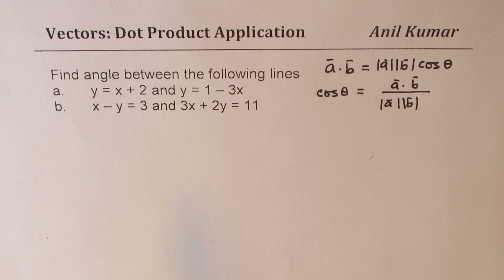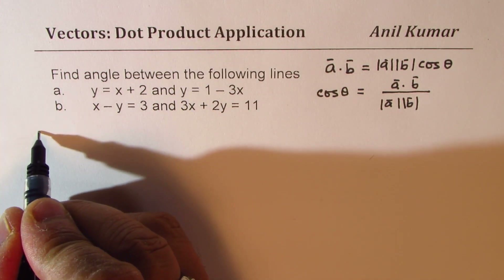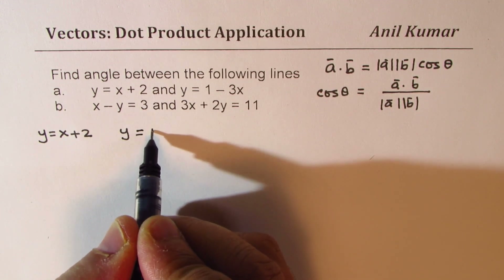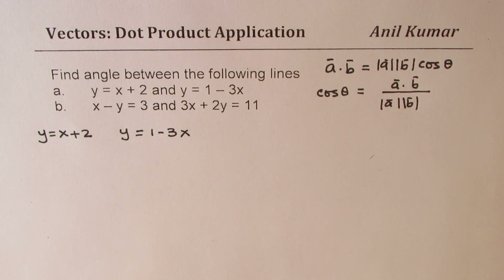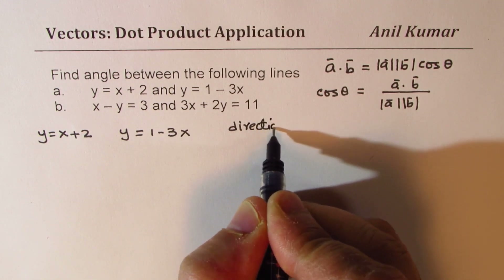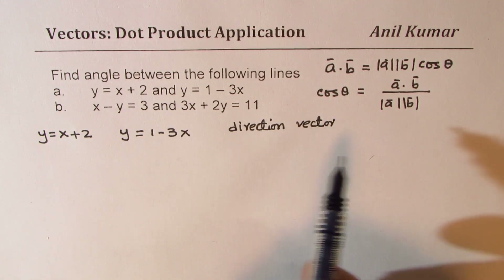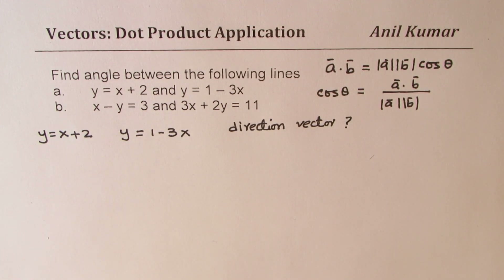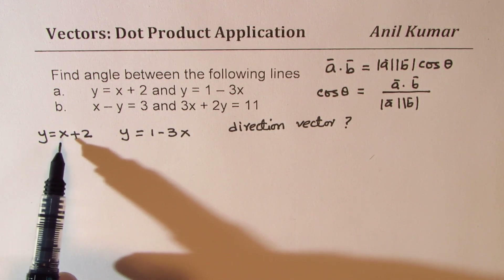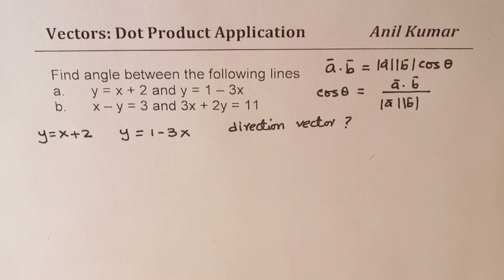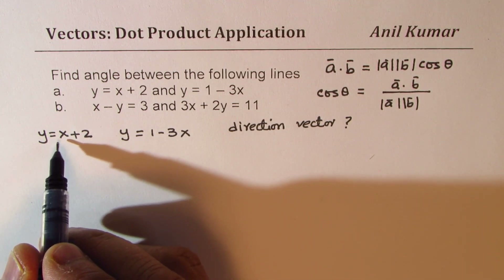The question is how do we get the vector from the lines? We are given two lines: y equals to x plus 2, and y equals to 1 minus 3x. We are looking for the direction vector. The angle between the two lines is the same as the angle their direction vectors make with one another. When we say y equals to x plus 2, the coefficient of x gives us the slope of the line, which is basically the rate of change of y with x.